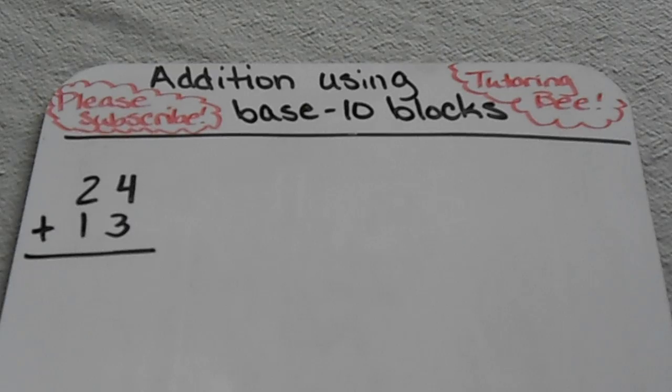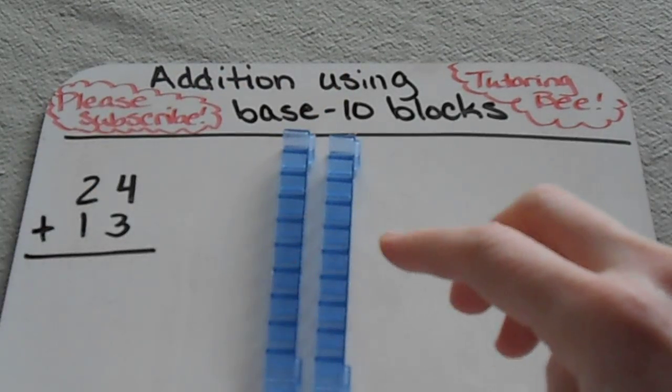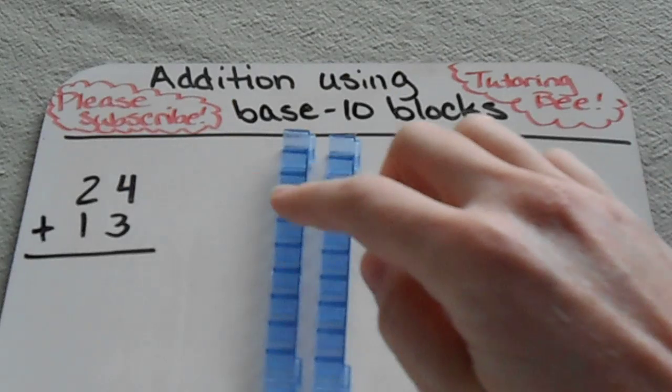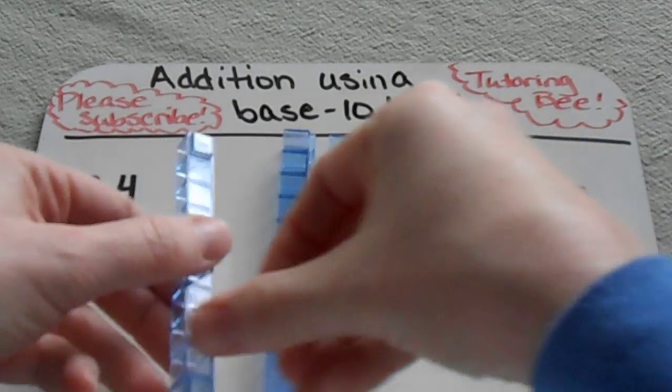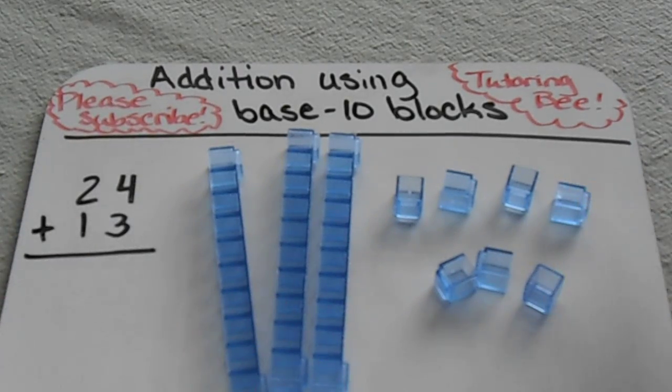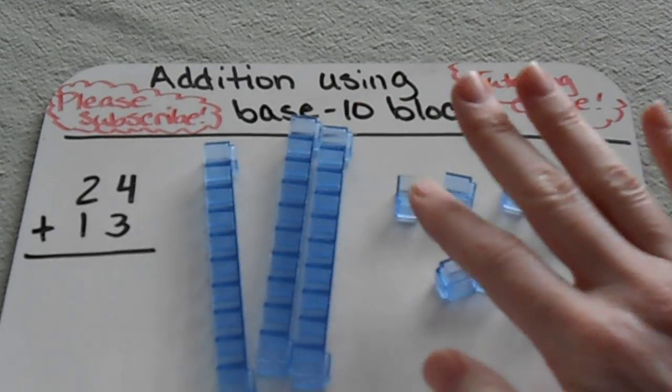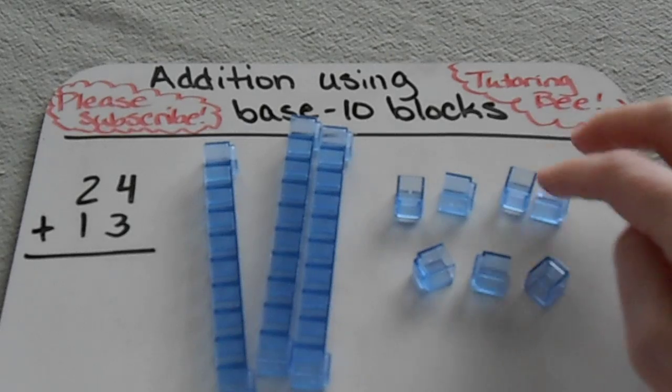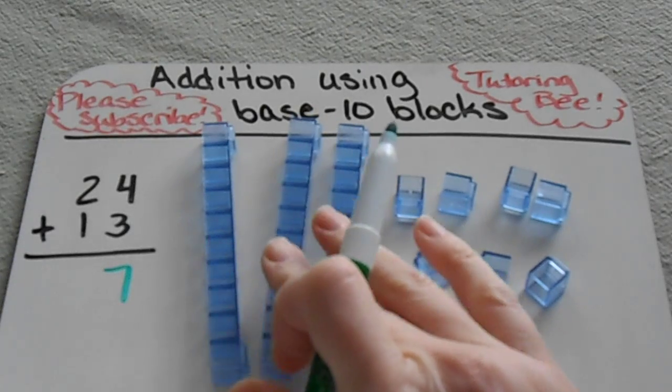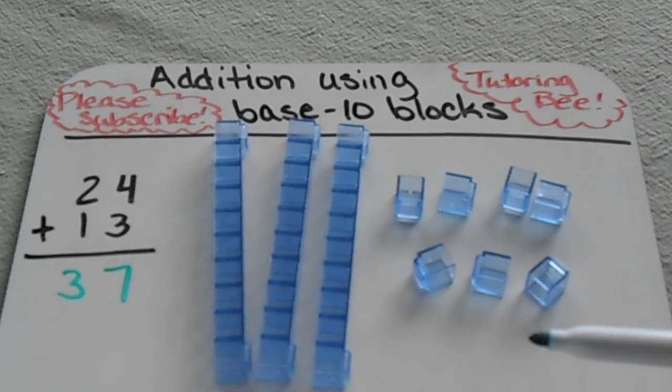I'm going to set up each of those numbers using my base-10 blocks. I have two tens and four ones for my first number, and then 13 is composed of one more ten and three ones. Then I just simply count them up. We always start with our smallest place value in case we need to regroup. If I count up my ones cubes, I can see that I have 7. And then if I count up my tens, I have 3 of those. So my answer would be 37.